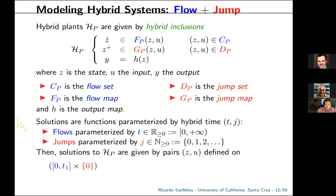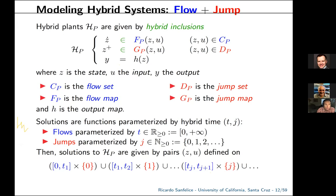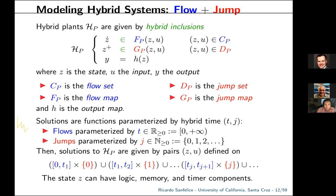Solutions are parameterized by hybrid time — a pair (t, j), where t is ordinary continuous time and j is a counter counting how many jumps have occurred. The domain over which solutions are defined is given by intervals of flow indexed by the number of jumps: an interval of flow with zero jumps, then extended with another interval when the jump counter increases from zero to one, and so on.